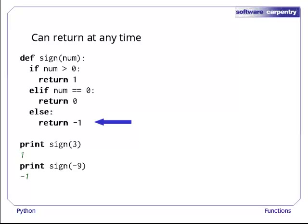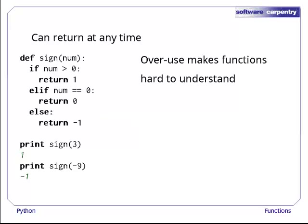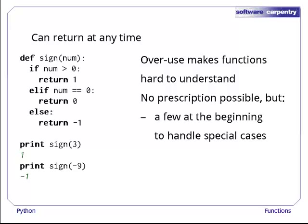Returning as soon as a value is known is handy, but overuse can make functions hard to understand, since people have to read the whole thing to figure out how it might behave. There are no hard and fast rules for what's good practice and what's abuse, but most programmers would agree that it's okay to have a small number of early returns at the very start of the function to handle special cases, and then one at the end to return the general result. We'll see examples of this style later on when we start to write larger programs.